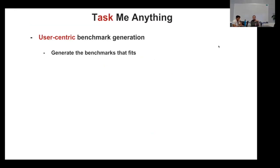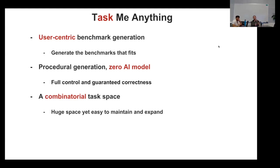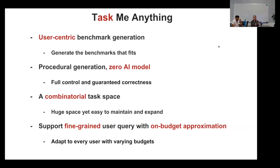Task Me Anything is a user-centric benchmark generation system, so we can generate a benchmark that fits our own needs. Task Me Anything adopts zero-AI generation — no AI model is involved. All tasks are generated by program, also called programmatic benchmark generation, giving us full control and guaranteed correctness. The system has a combinatorial task space that is very large and easy to maintain and expand. Finally, we support fine-grained user queries with on-budget approximation, because it is very expensive for users to test a model against all possible tasks.